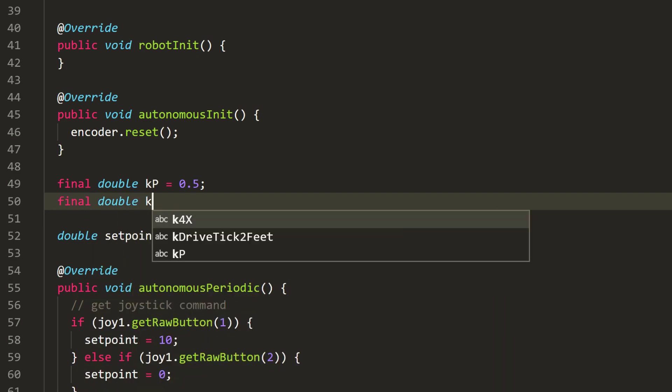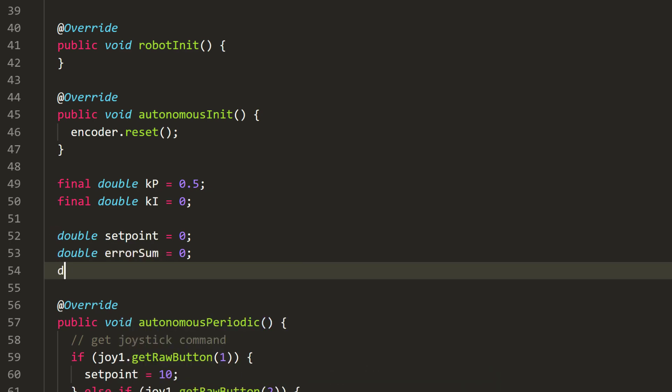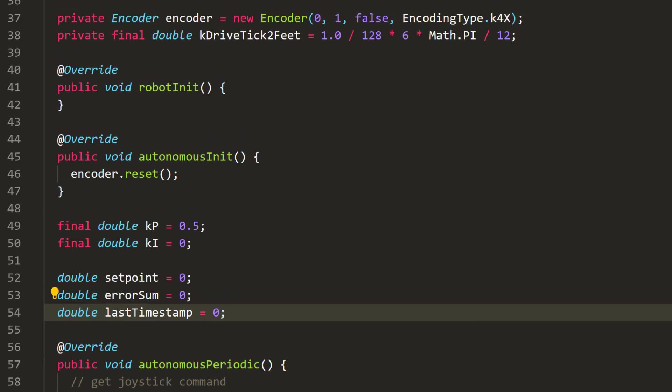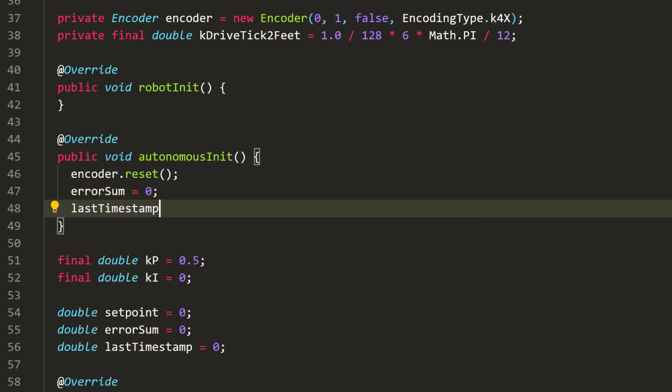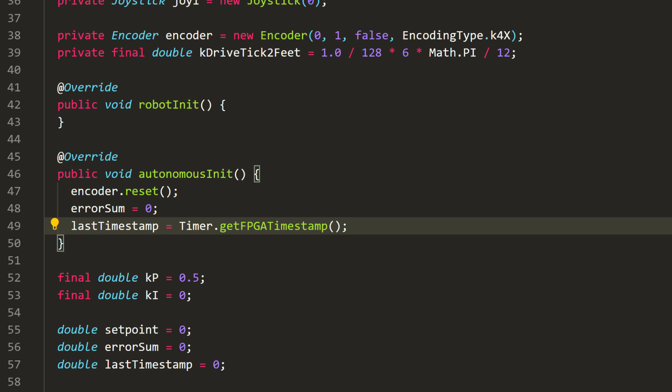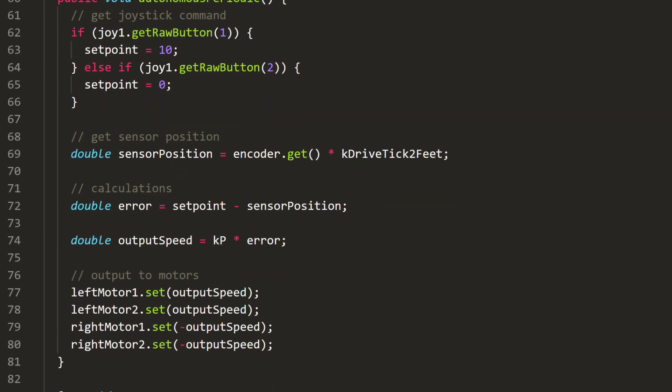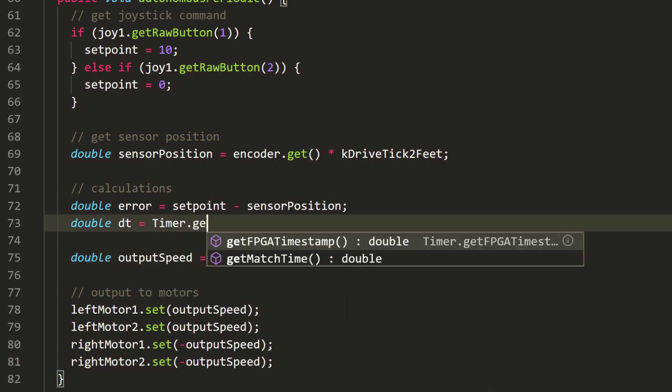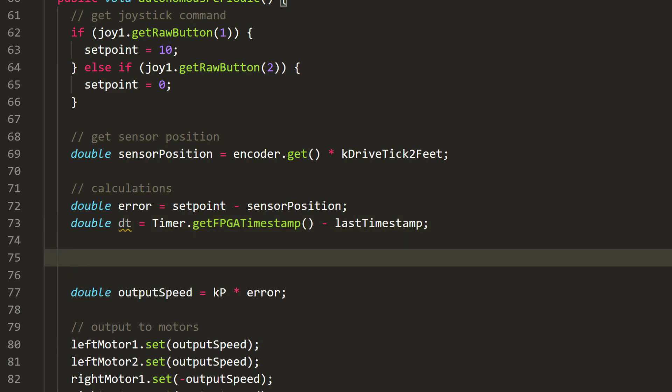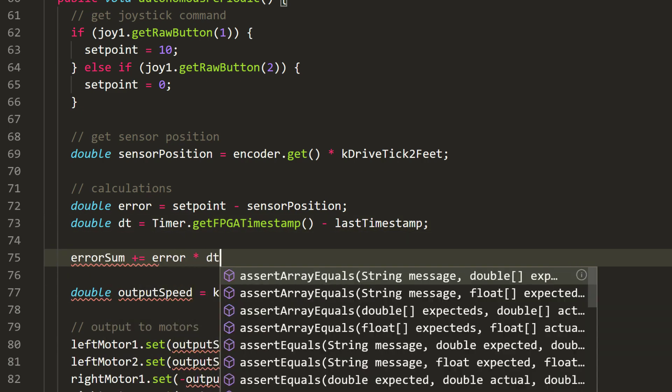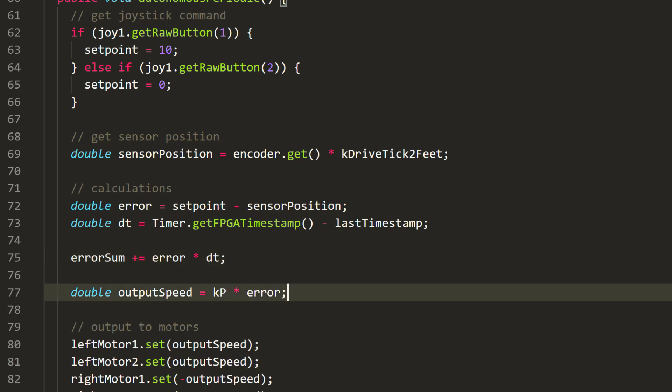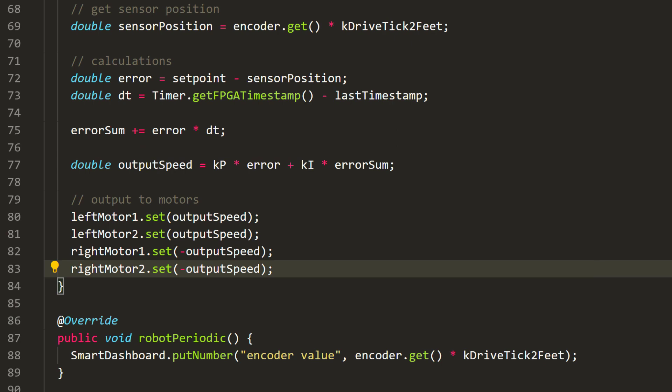We will set up a constant variable to store KI. To find the integral, we will sum up all the errors multiplied by the time interval delta t. So we need global variables to store the error sum and the timestamp of the previous calculation. And every time PID starts, we will reset error sum to zero and the last timestamp to the current time. Each time when we execute the code, we will first find delta t by subtracting the current time by the previous time. Then add the current error times delta t to the error sum. Finally, in the output formula, we will add KI times error sum to the equation. When everything is done, set the previous timestamp to now.